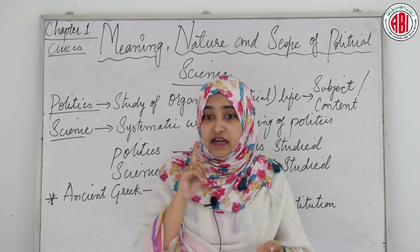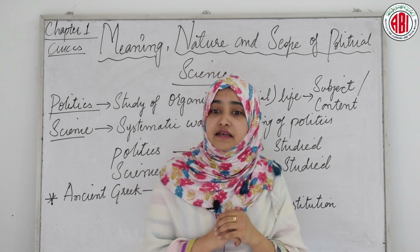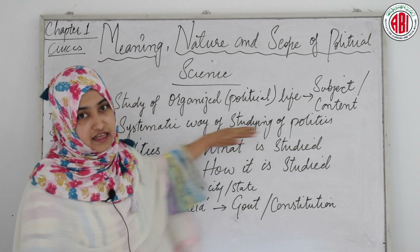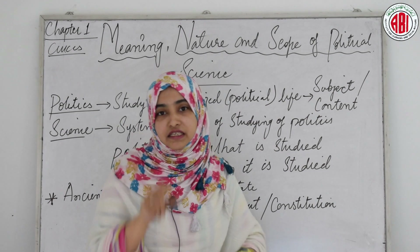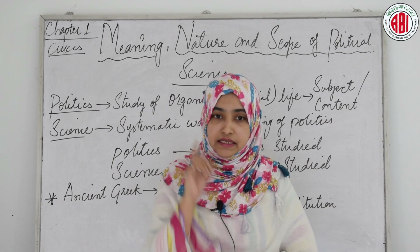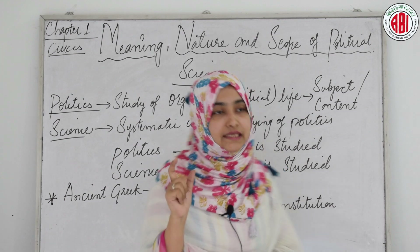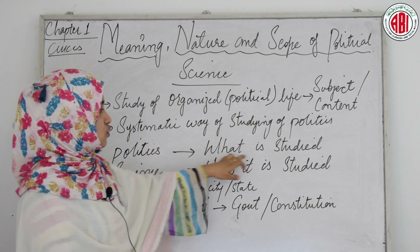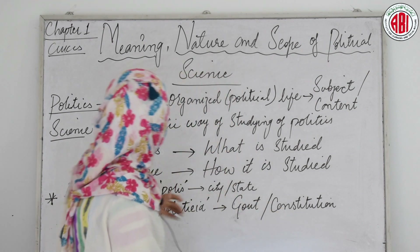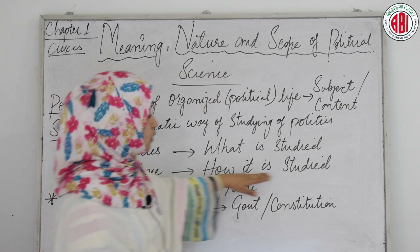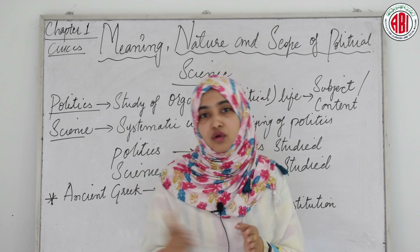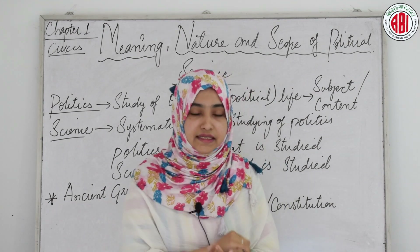The content belongs to politics, and science refers to the systematic way of studying politics. The study of politics in a systematic and analytical way is called political science. In political science, the term 'political' refers to what is studied, and the term 'science' refers to how it is studied. In short, 'political' is the scope of the subject while 'science' is the method of study.